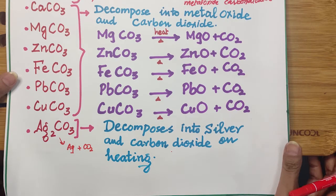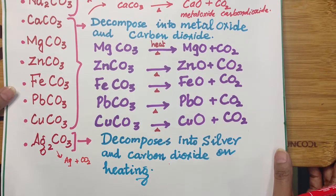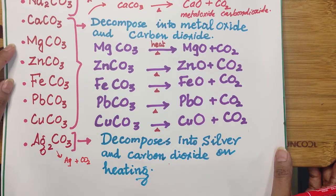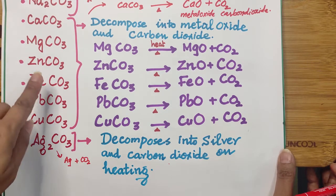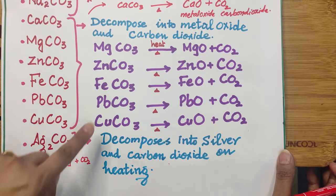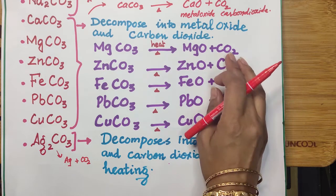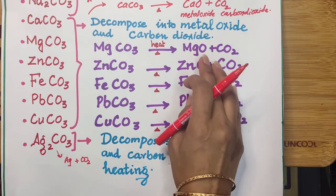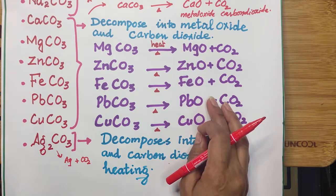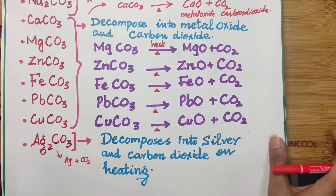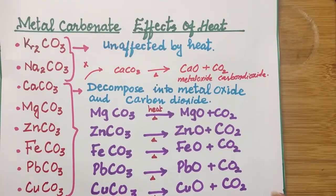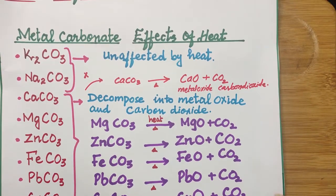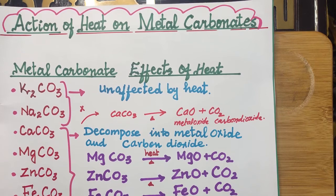These are the reactions which I have written here to show you how these carbonates produce carbon dioxide gas as well as metal oxides. This is the way through which we can describe the action of heat on metal carbonates.